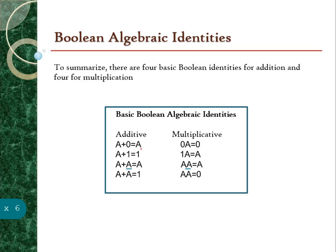This is the summary of Boolean algebra identities: A plus 0 equals A; A plus 1 equals 1; A plus A equals A; A plus NOT-A equals 1; 0 multiplied with A equals 0; 1 multiplied with A equals A; A multiplied with A equals A; and A multiplied with NOT-A equals 0. You have to remember these Boolean algebra identities.